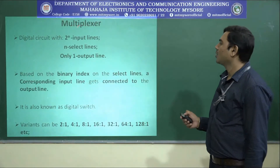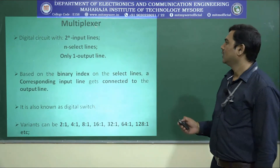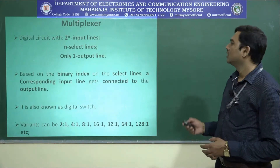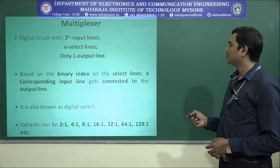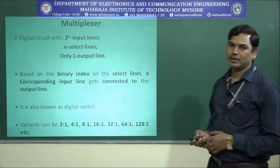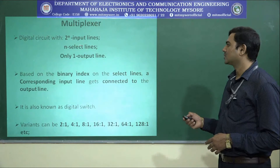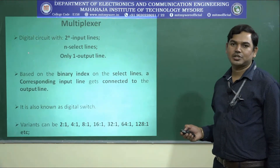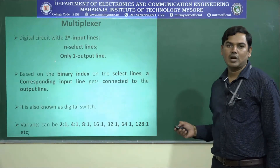Let us try to understand one more combinational circuit known as the multiplexer. A multiplexer is a digital combinational logic circuit which has got 2 to the power n input lines, n number of select lines, and only one output line. Based on the index we place on these n number of select lines, a connection is established between the output and the input channel whose index we have placed on the select lines. That is how a multiplexer works.